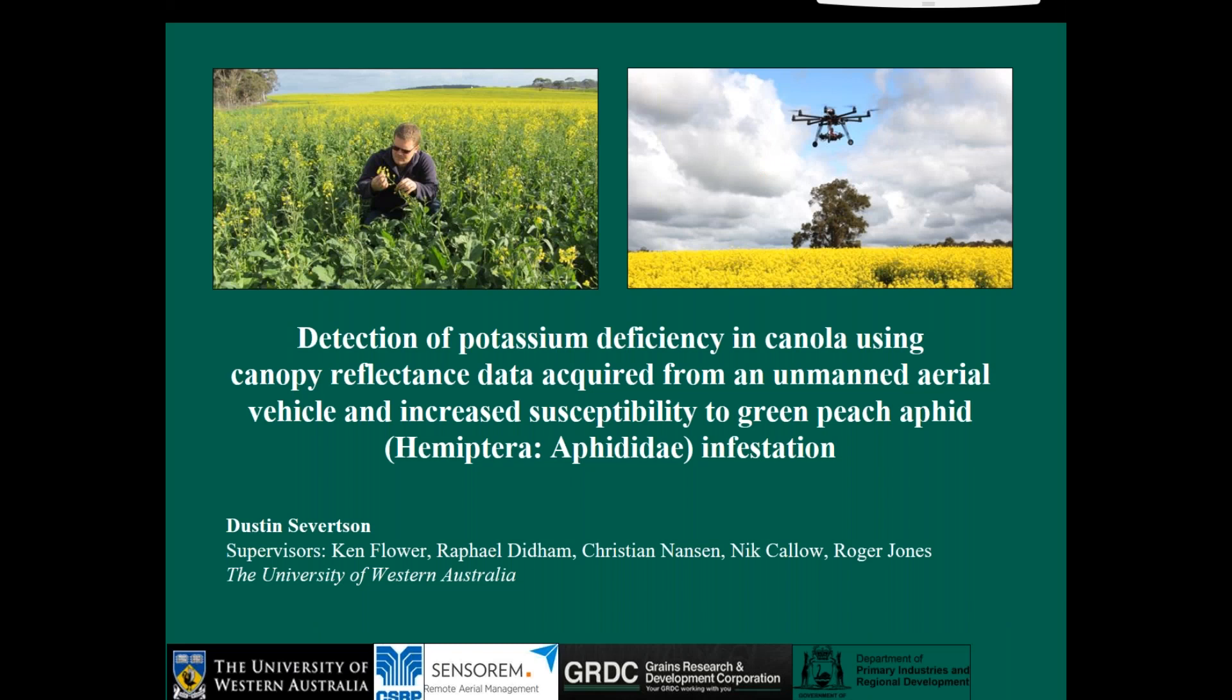All right, so I'll just talk a bit about what I did in part of my PhD looking at detection of potassium deficiency in canola, using a multispectral camera, and also taking plants back to the lab and taking hyperspectral images for comparison. And then I looked at green peach aphid infestation and how basically potassium deficiency really increases the numbers of green peach aphids on plants and how they reproduce on these plants.